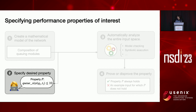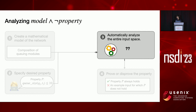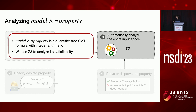Now we have the model and properties defined. In the next step, we analyze them together. Specifically, we analyze the conjunction of the model and the negation of the property, because if that is satisfiable it means the property is not going to hold in some cases. This logical formula is an SMT formula — quantifier-free, a mix of booleans and integer arithmetic — and we feed it to Z3 to analyze whether it is satisfiable.